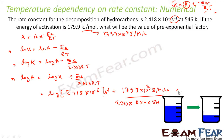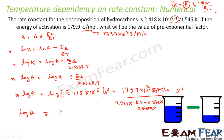If you look at the units — K is in Kelvin, R is in joules per mole per Kelvin, so Kelvin cancels and joules per mole cancels, leaving a dimensionless result. When you solve this, log A comes out to be 12.5917, and A is the antilog of that — which is 3.9×10¹² per second.